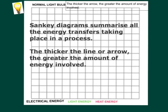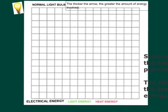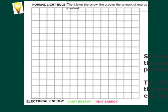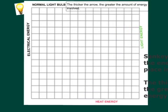Now that we've identified the energy transfers taking place, we can draw our Sankey diagram. Sankey diagrams summarize all the energy transfers taking place in a process. The thicker the line or arrow, the greater the amount of energy involved. For a normal light bulb, we've already identified that electrical energy is going in, light energy is the useful energy transfer, and heat energy is the waste energy transfer.